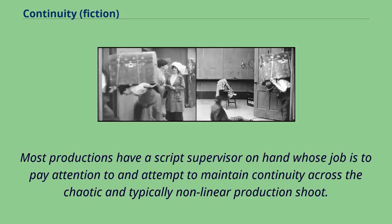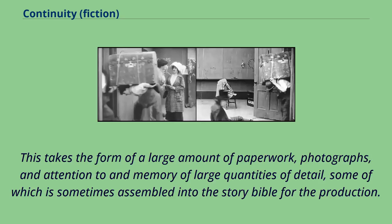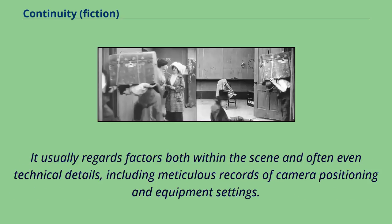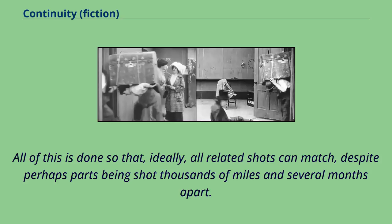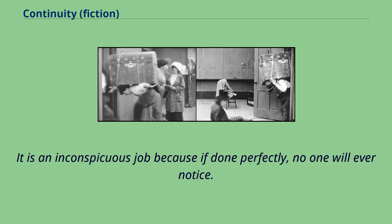Most productions have a script supervisor on hand whose job is to pay attention to and attempt to maintain continuity across the chaotic and typically nonlinear production shoot. This takes the form of a large amount of paperwork, photographs, and attention to and memory of large quantities of detail, some of which is sometimes assembled into the story bible for the production. It usually regards factors both within the scene and often even technical details, including meticulous records of camera positioning and equipment settings. The use of a Polaroid camera was standard but has since been replaced by digital cameras. All of this is done so that, ideally, all related shots can match, despite perhaps parts being shot thousands of miles and several months apart. It is an inconspicuous job because if done perfectly, no one will ever notice.